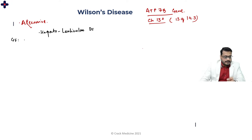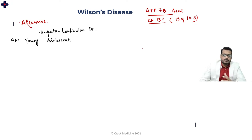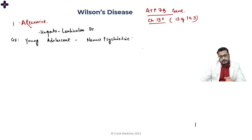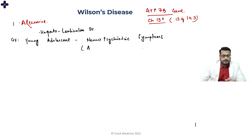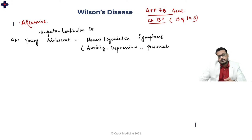Clinically, Wilson's disease presents in young adolescents with recent neuropsychiatric symptoms spanning a wide spectrum: anxiety, depression, personality changes, and behavioral problems. This is due to copper deposition in the basal ganglia — specifically the putamen and globus pallidus, which together form the lenticular nucleus.